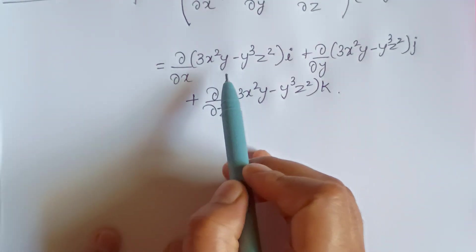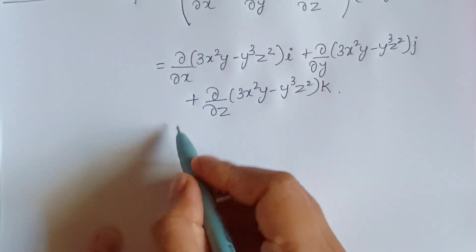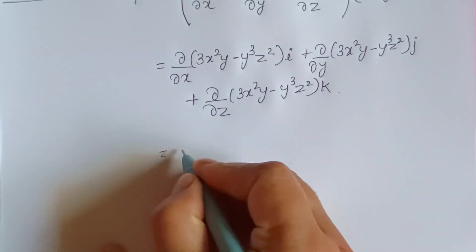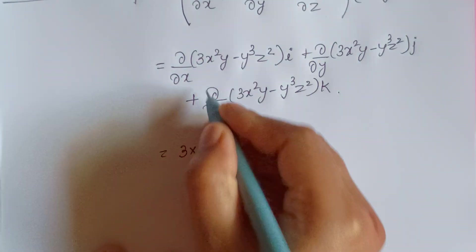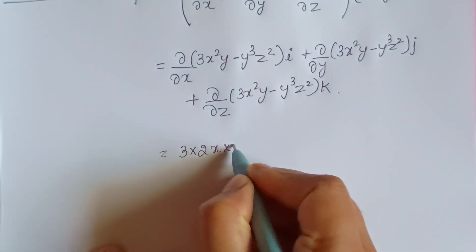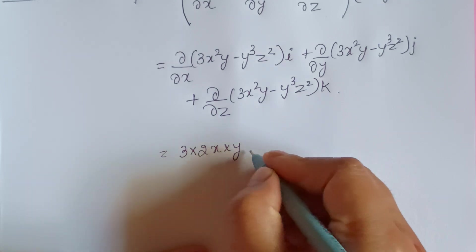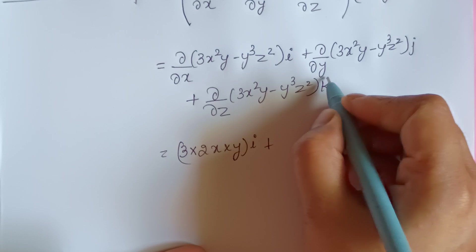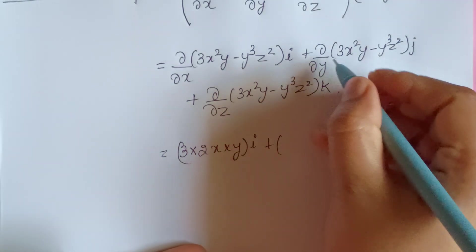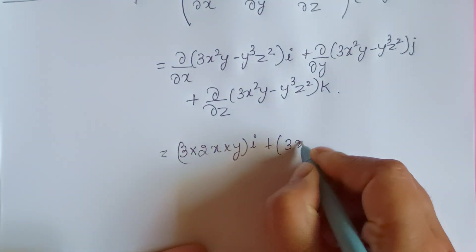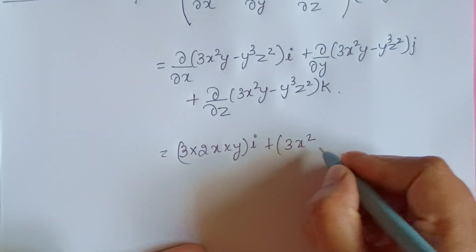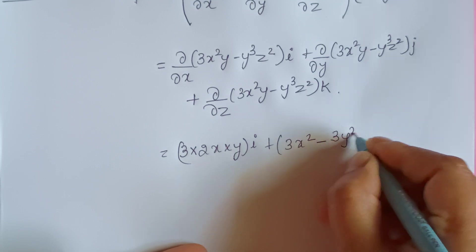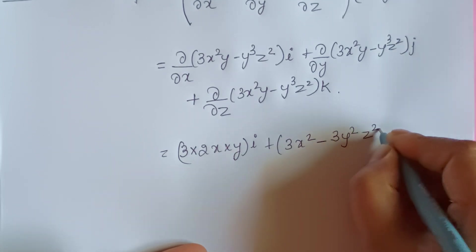As I'm partially differentiating only with x, this is going to become 6xy into i. Plus partially differentiating with respect to y, this is going to become 3x² minus 3y²z² into j.